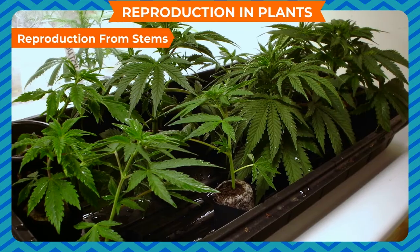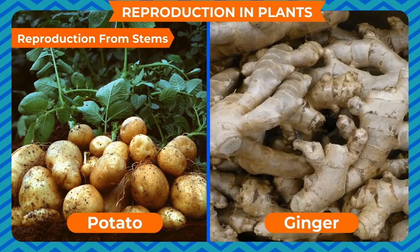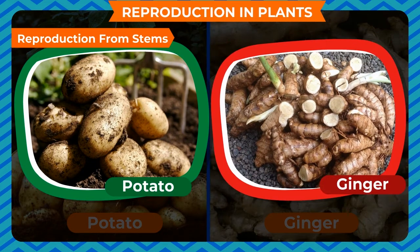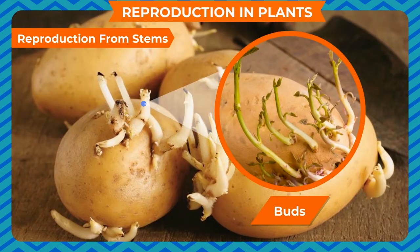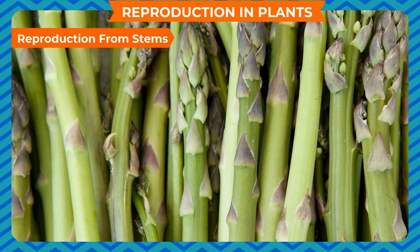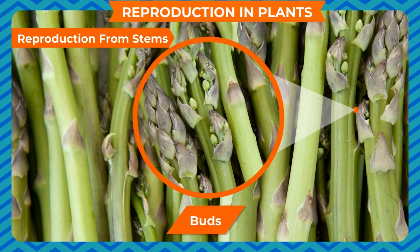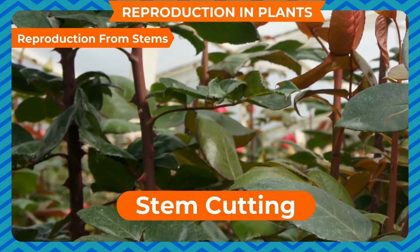Reproduction from stems: plants like potato and ginger grow from stems. Potato and ginger are underground stems that store food. Potato has buds known as eyes from where new plants grow. Some new plants also grow from pieces of stem because they have buds on them. These pieces of stem are called stem cuttings.